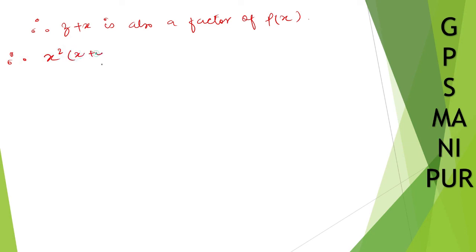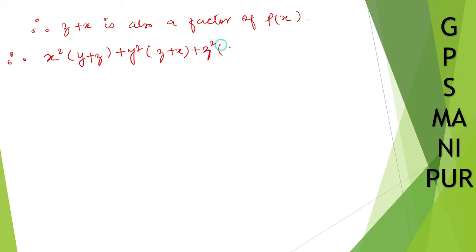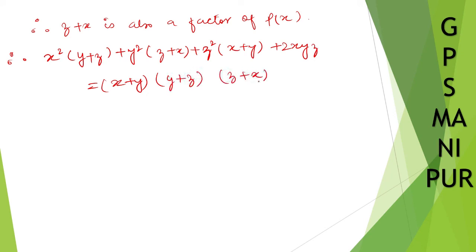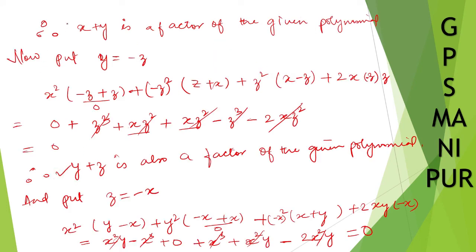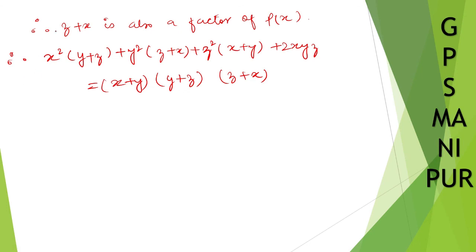Therefore, x squared y plus zy plus z plus y squared plus y squared z plus x plus z squared plus z squared x plus y plus 2xyz can be written as the product of the three factors: (x plus y)(y plus z)(z plus x). That's the answer. Thank you so much, we will meet in the next question.